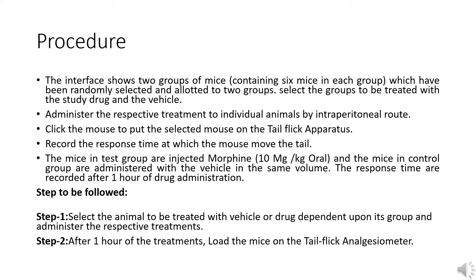Administer the respective treatment to individual animals by intraperitoneal route. Select the mouse and put it on the tail flick apparatus. Record the response time at which the mouse moves its tail. The mice in the test group are injected morphine 10 mg/kg oral, and the mice in the control group are administered with the vehicle in the same volume. The response times are recorded after one hour of drug administration.